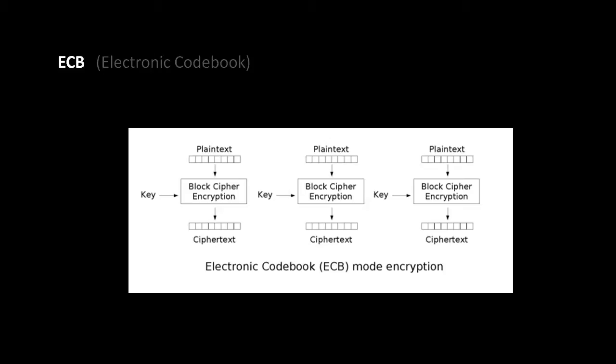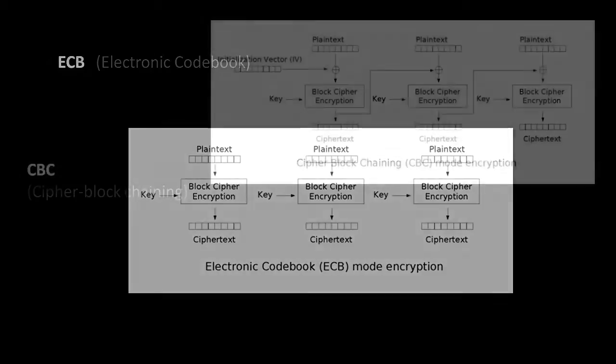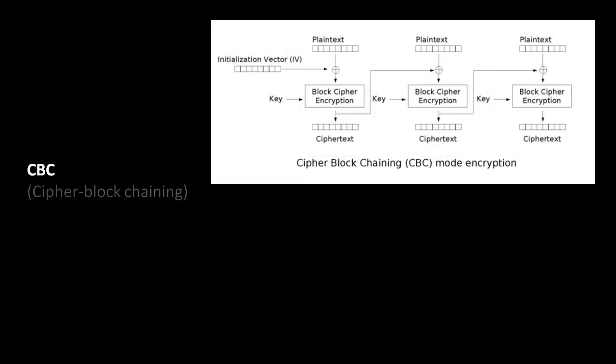So ECB is the do-nothing mode. But in CBC, Cipher Block Chaining, we start off with, in addition to our random key, an additional random piece of data called an initialization vector, which is a block-sized chunk of random data.